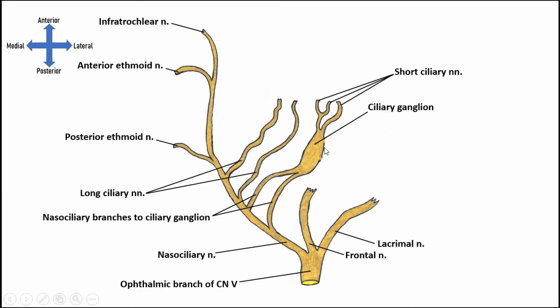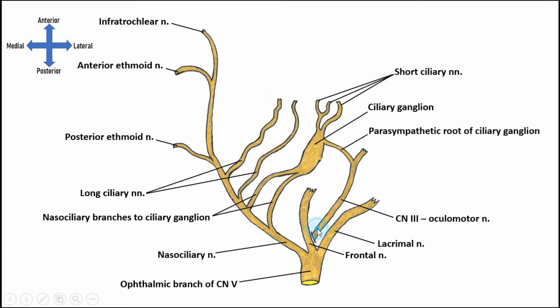So what is the ciliary ganglion doing? The ciliary ganglion contains postganglionic parasympathetic nerve cells. As cranial nerve III, the oculomotor nerve, comes into the orbit, it conveys preganglionic parasympathetic axons to the ciliary ganglion. These peel off, travel through the parasympathetic route into the ganglion, and synapse with postganglionic parasympathetic cell bodies. Those extend their axons out through the short ciliary nerves to the circular fibers of the iris — causing pupillary constriction — as well as to the ciliary body, which contracts to round up the lens and cause accommodation.